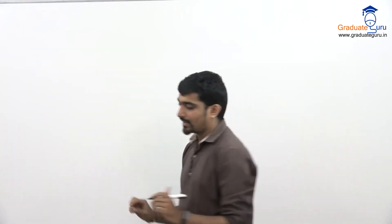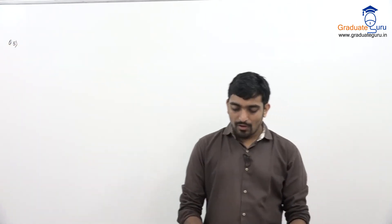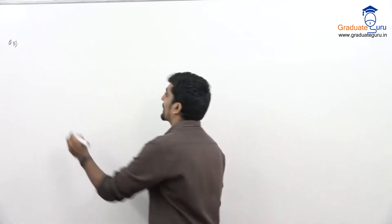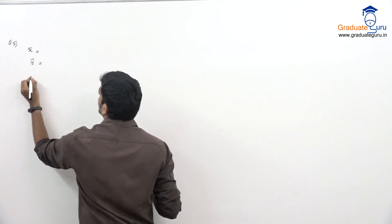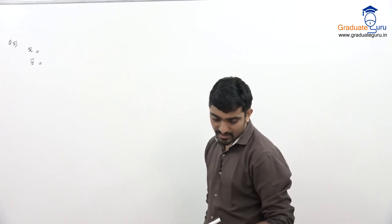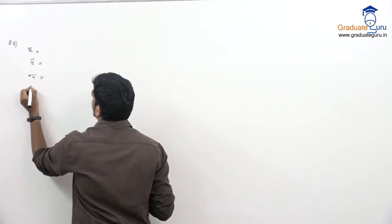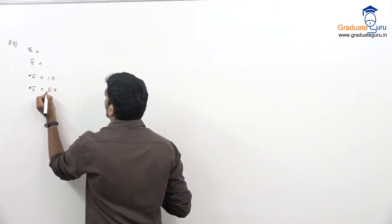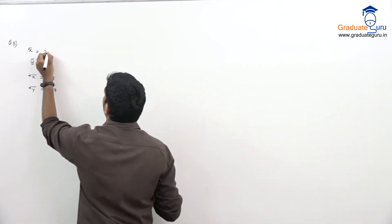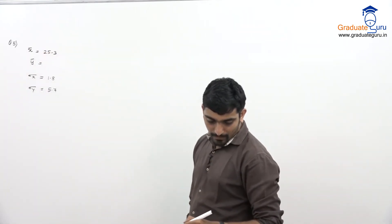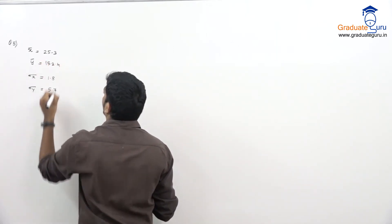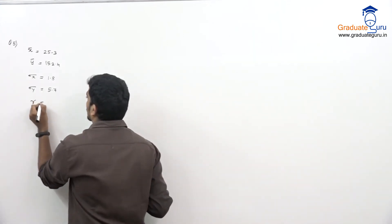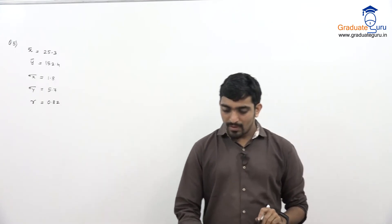We start with question number 5. For a bivariate distribution: x-bar = 25.3, y-bar = 152.4, sigma x = 1.8, sigma y = 5.7, and coefficient of correlation r = 0.82. Find two regression equations and estimate y when x = 24, and x when y = 145.